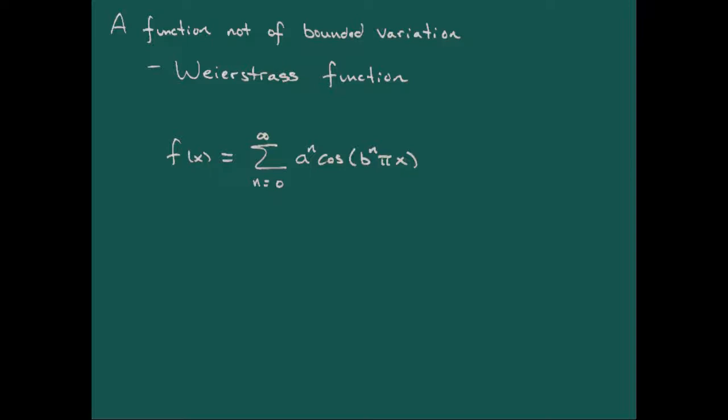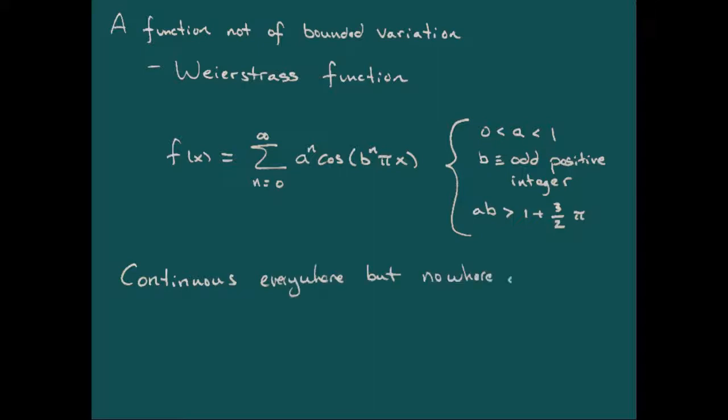So it was really written as a Fourier series with the conditions on the coefficients that a was going to be some real number between 0 and 1, b was going to be an odd positive integer, so that a times b was going to be greater than 1 plus 3 halves times pi. When Weierstrass introduced this function, the big deal about it was that this was a continuous function, so it was continuous everywhere, but it was nowhere differentiable. And so it was assumed for a really long time, even going back to Gauss, that if a function was continuous, then the set of points at which it couldn't be differentiated was going to be finite or countable. And that turned out absolutely not to be true.